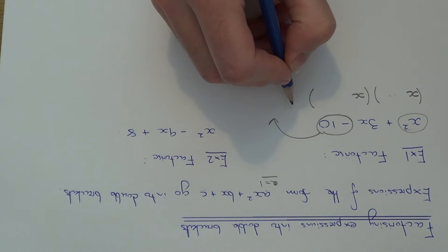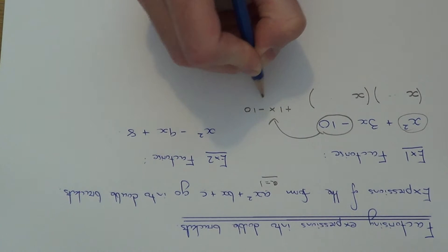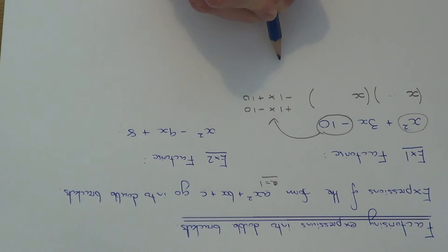So the factors of minus 10 could be plus 1 times minus 10. Again, you could have the same pair with different signs, so you could have minus 1 times plus 10. And you can also have 2 times minus 5. And there's one more pair, you can also have minus 2 times plus 5.